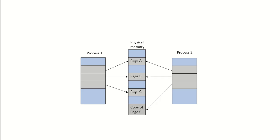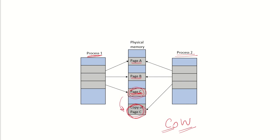For example, initially pages A, B, and C are shared by both the parent and child process, all marked as Copy-on-Write. When the child process wants to write to page C, a copy of page C is created. Since process 1 does not need the modified data, it is not required to use that copy — process 2 uses the new copy to write to page C.